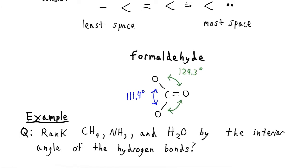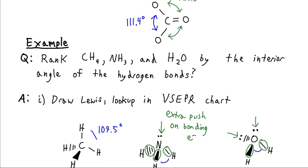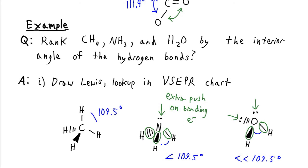As an example, let's say that we wanted to rank methane, ammonia, and water by the interior angle of their hydrogen bonds. So we could draw the Lewis structures for these and look up what their 3D structure would be in the VSEPR chart. Now according to our VSEPR chart, these all are going to have tetrahedral electron geometry. So they would all have 109.5 degrees of space. Now we realize that because of the existence of this lone pair of electrons, which pushes a little bit more than the bonding pairs do, that ammonia is going to have reduced bond angles down here.